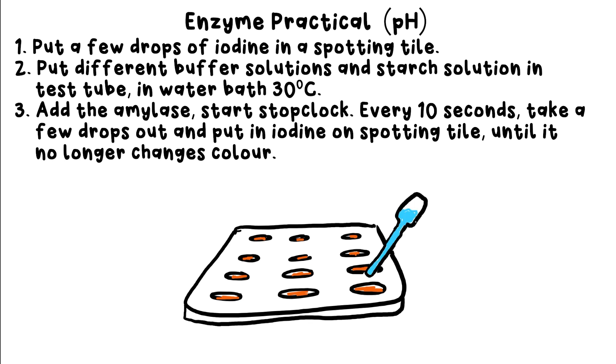After 10 seconds, use a dropping pipette to take a couple of drops from your mixture and put it on the first spot on your tile. It should turn black because the starch is still there. It hasn't had time to be broken down by the amylase yet.